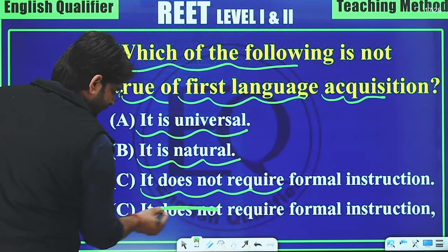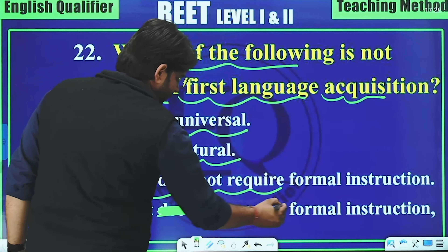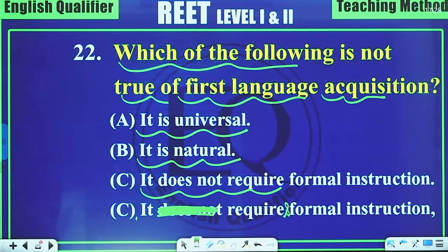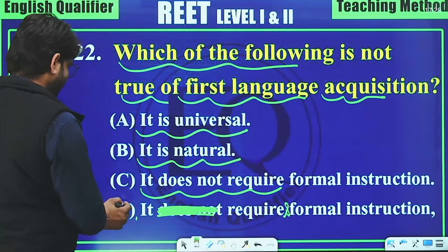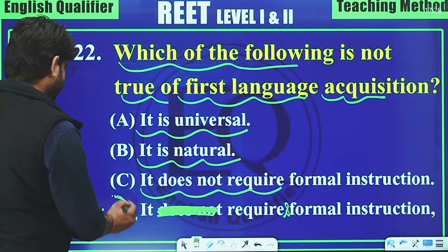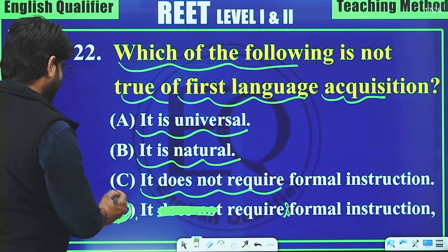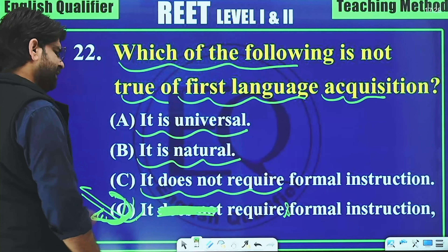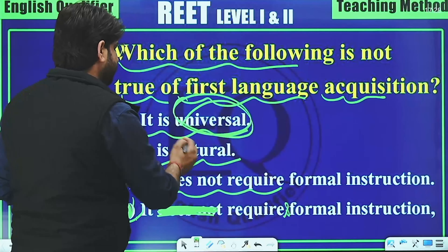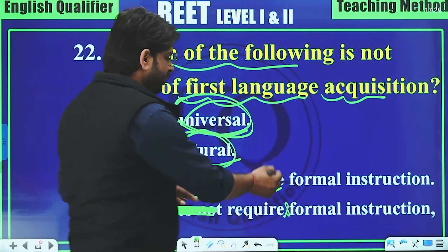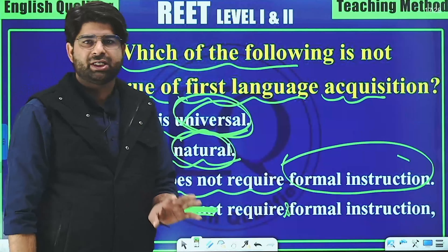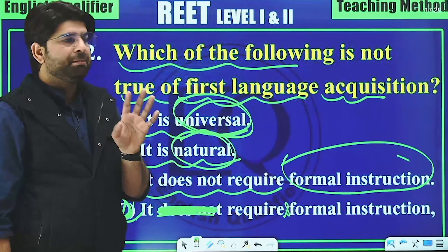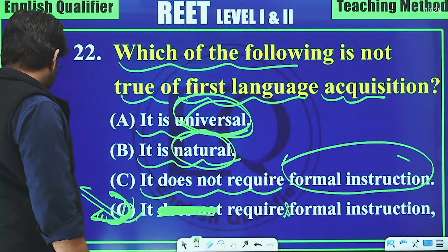After correction, option D states 'it requires formal instruction.' First language acquisition is universal and does not require formal instruction. Therefore, the statement 'it requires formal instruction' is NOT true — making option D the correct answer.